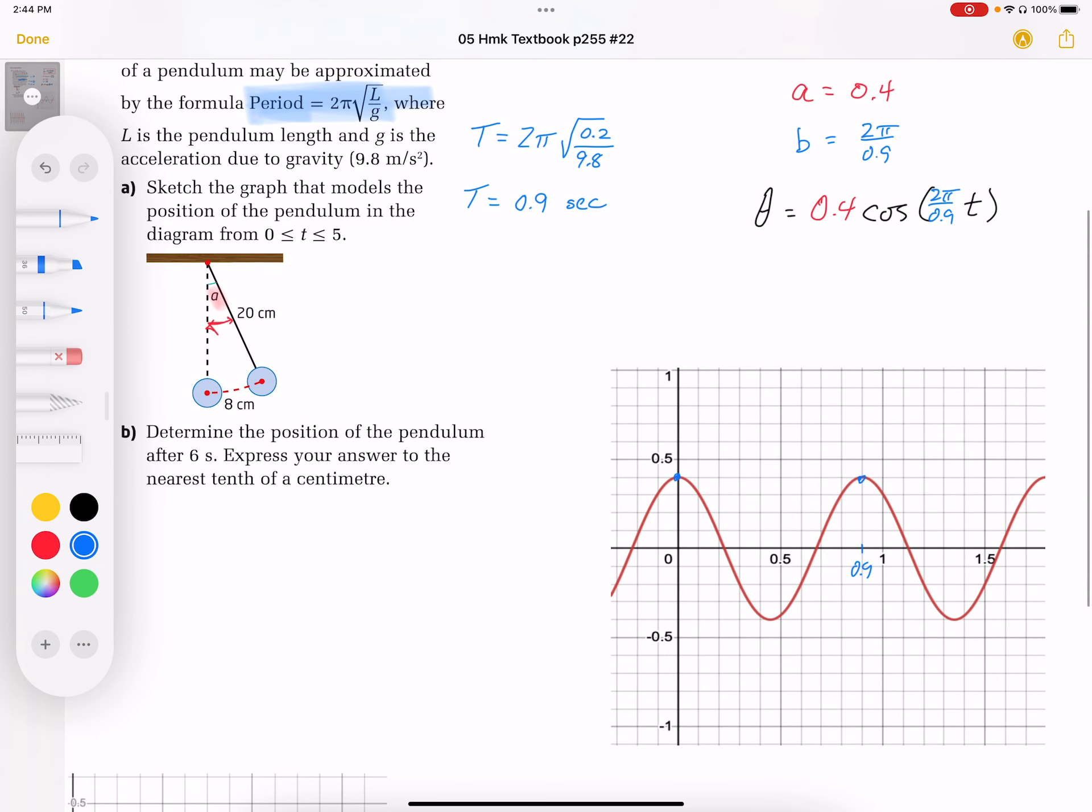And the repeating, the amplitude, the maximum angle that it achieves when it swings back and forth, is going to be this 0.4 that we have as our amplitude here. So there's our 0.4 amplitude showing up.